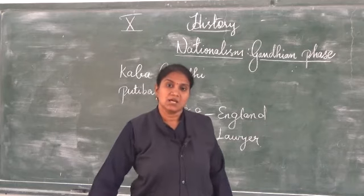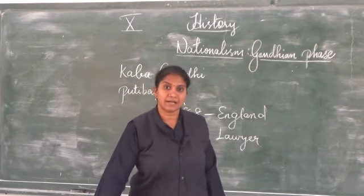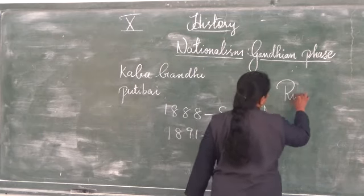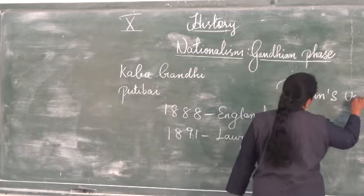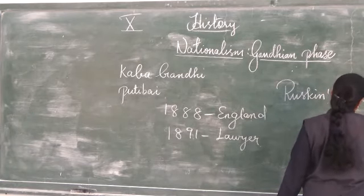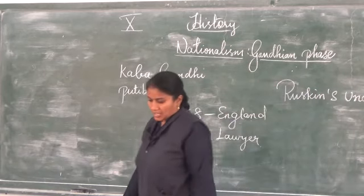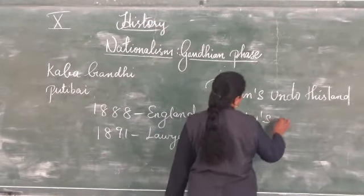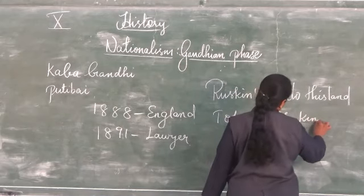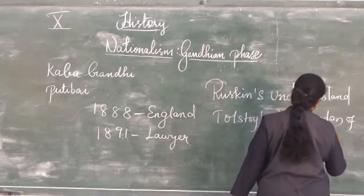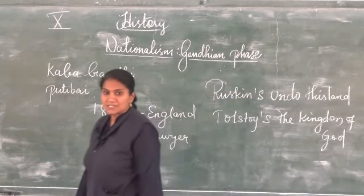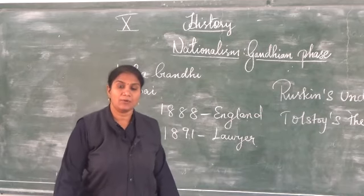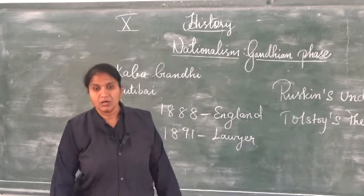Gandhiji was introduced to the works of Tolstoy and John Ruskin. John Ruskin's work was 'Unto This Last' and Tolstoy's was 'The Kingdom of God Is Within You.' Gandhiji was much influenced by these two works. Apart from that, he was also influenced by Thoreau's 'Civil Disobedience.'